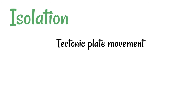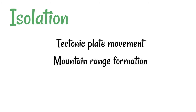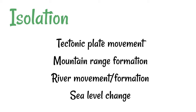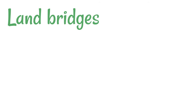Another method is mountain range formation, where mountains form in an area and could separate one population into two. Another would be river formation, or movements of rivers into a new area. Another would be sea level change — imagine there's one piece of land and the sea level changes, forming a piece of ocean between two sections. Now we've got two pieces of land and the organisms on them become separated.